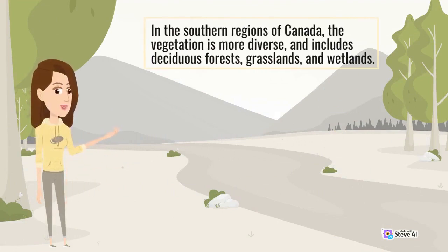In the southern regions of Canada, the vegetation is more diverse, and includes deciduous forests, grasslands, and wetlands.